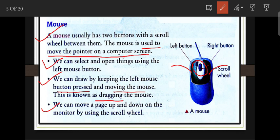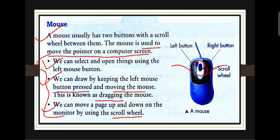We can move a page up and down on the monitor by using the scroll wheel. The scroll wheel is mainly used for scrolling the page up and down.